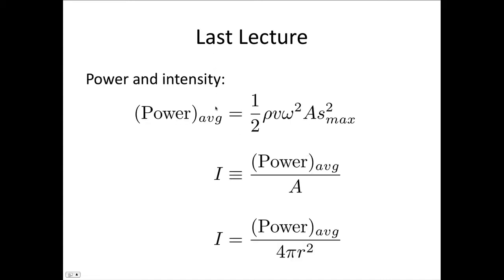Finally, we finished up by showing these power and intensity relationships. The average power delivered by a sound wave is given by 1/2 ρ (the density) times v (the velocity) times ω² times A (the area) times s²_max (the amplitude).